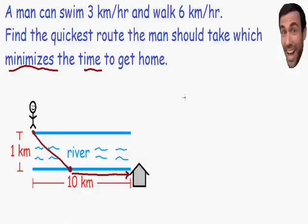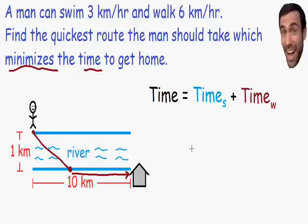How do we find this equation for time? The total time this man takes to get to his house is equal to the time spent swimming plus the time spent walking. Here I wrote down the equation for time: the total time equals the time spent swimming (written in blue with an 's' subscript for swimming) plus the time spent walking (written in dark red with a 'w' subscript for walking).